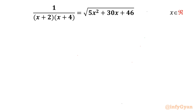Welcome back to Infigyan friends. Today in this video we are going to take up one very interesting and challenging rational equation: 1 over (x+2)(x+4) equals the square root of 5x² + 30x + 46. We have to find out the real solutions.